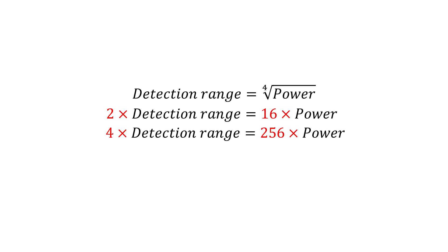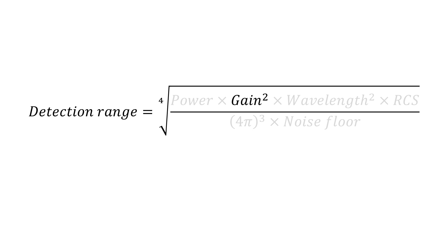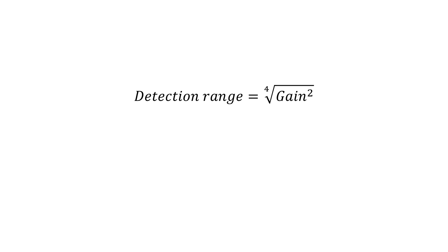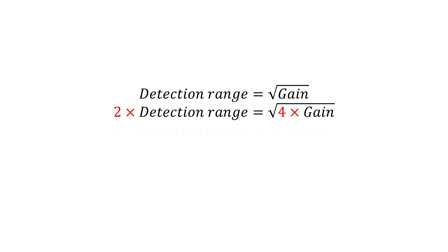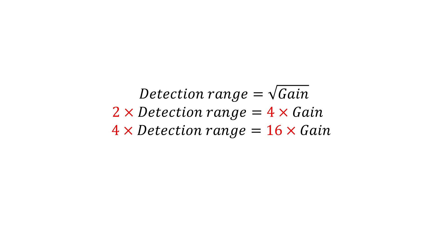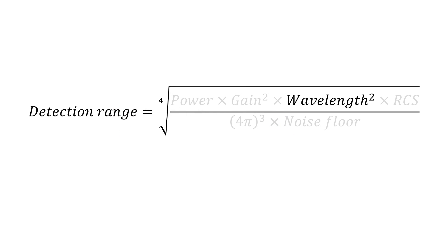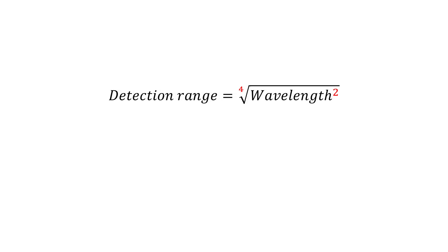Looking at another variable such as gain, we can see that it doesn't behave the same as power output. Instead it is squared within the equation, which brings gain to just having a square root relationship with detection range. Put simply, this means that we can double the detection range of a radar by merely quadrupling the gain, or to quadruple the detection range we can increase gain by 16 times, which is far better than the 256 factor that we needed with power. Wavelength is also squared within the equation, meaning that it has the same detection range relationship as gain.